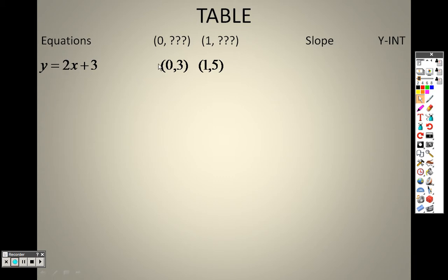So as you can see, I could use those two to give me the slope and the y-intercept, or I could just stare at them and go, oh look, the number out in front of the x is a 2, and the number hanging out there by itself is the y-intercept, and that's a 3.